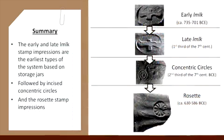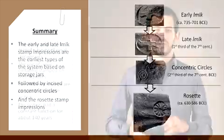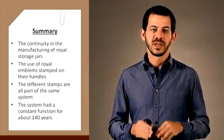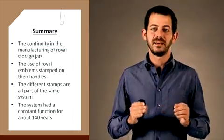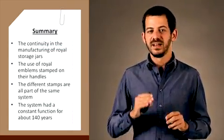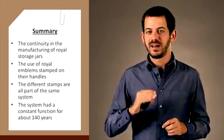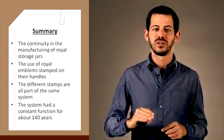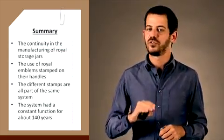To summarize, the early and the late Lamelech stamp impressions are the earliest types of the system based on store jars, followed by incised concentric circles and then rosette stamp impressions. The continuity in the manufacturing of the royal store jars and the use of the royal emblems stamped on their handles both indicates that the different stamps are all part of the same system that probably had a constant function for about 140 years.